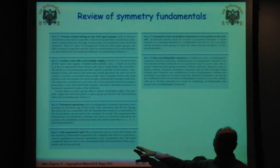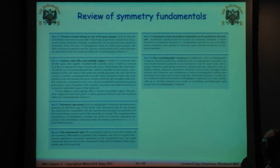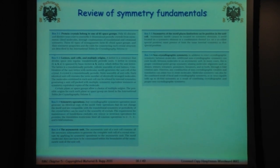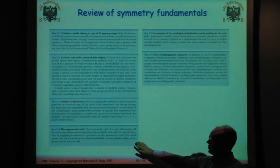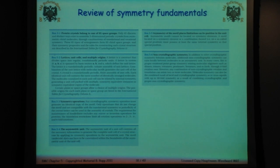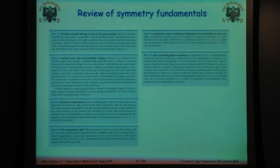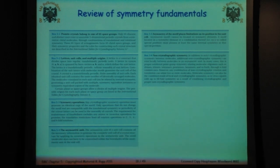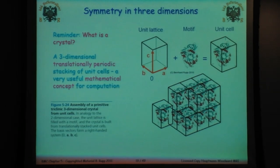The asymmetric unit of the unit cell contains all the necessary information to generate the complete unit cell of the crystal structure by applying symmetry operations. The motif does not have to be constrained within the boundaries of the unit cell — part of it can hang outside but it will be repeated in periodicals. Asymmetry of the motif places limitations on its position: an asymmetric system can't be located on a symmetry element. You can also have non-crystallographic symmetry — things that appear symmetrical but on closer inspection are actually different.